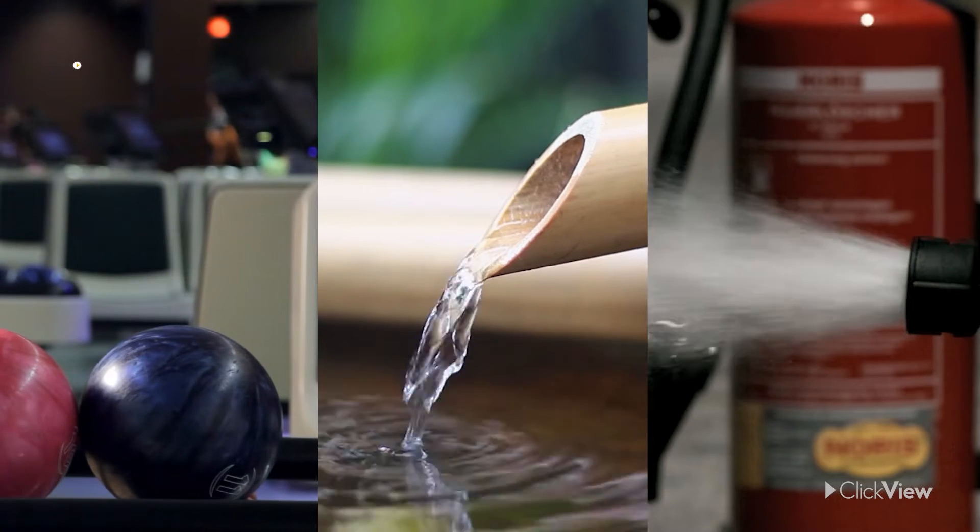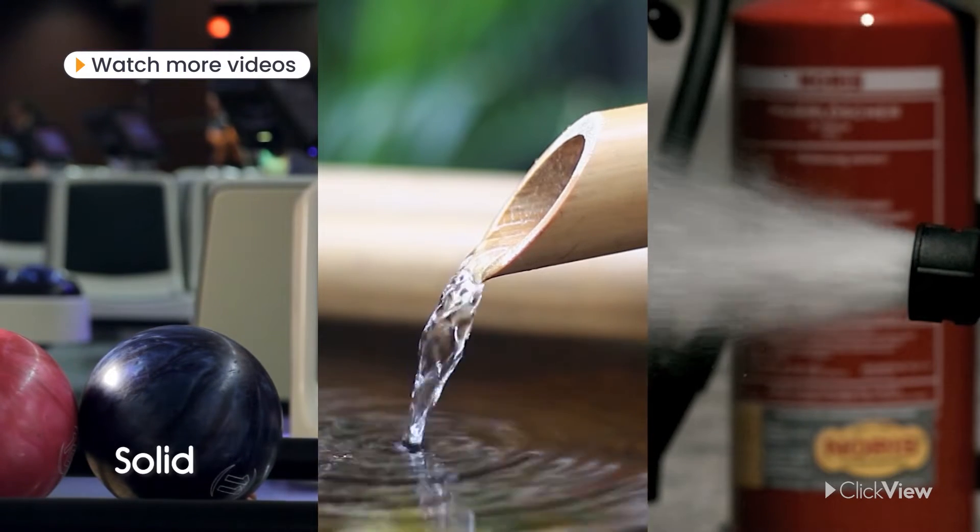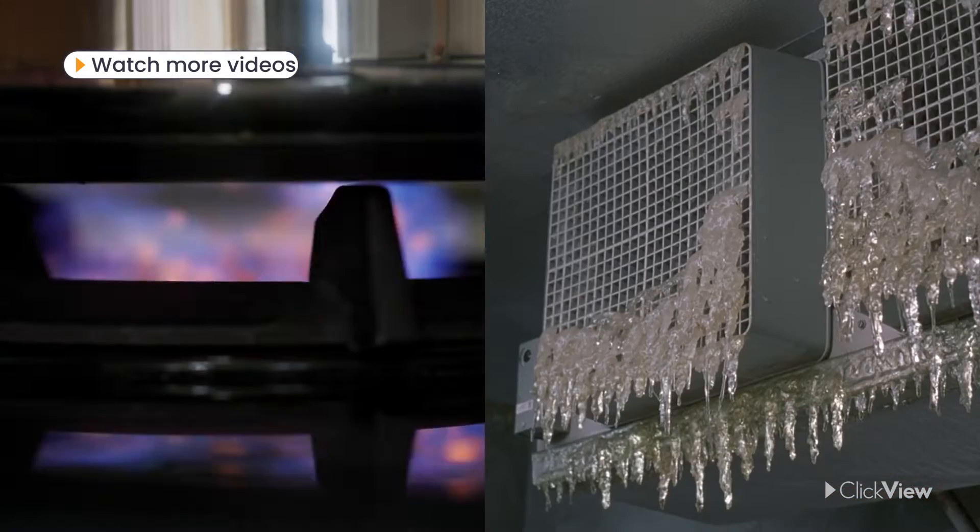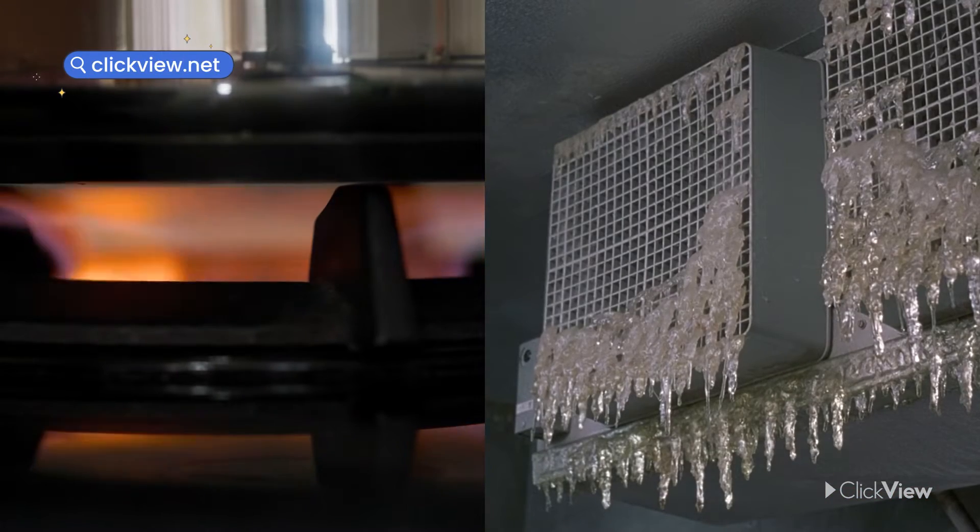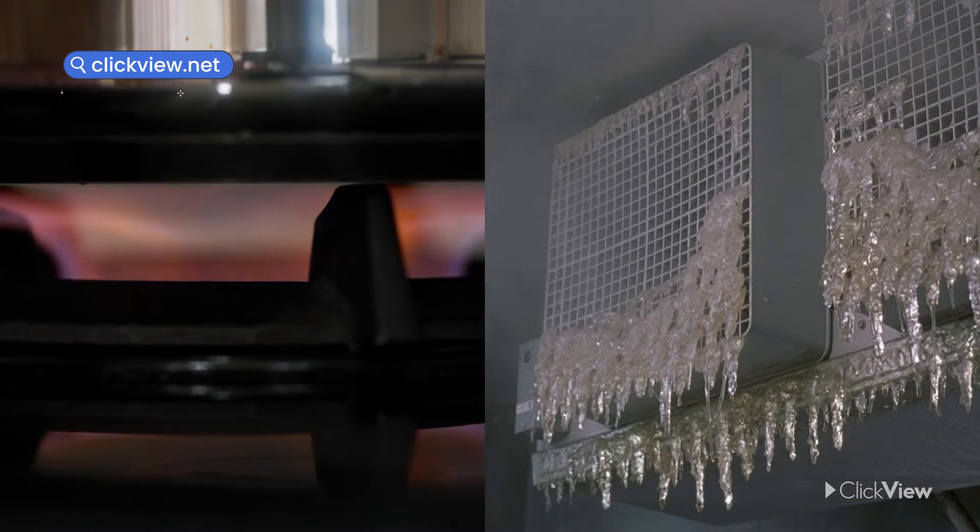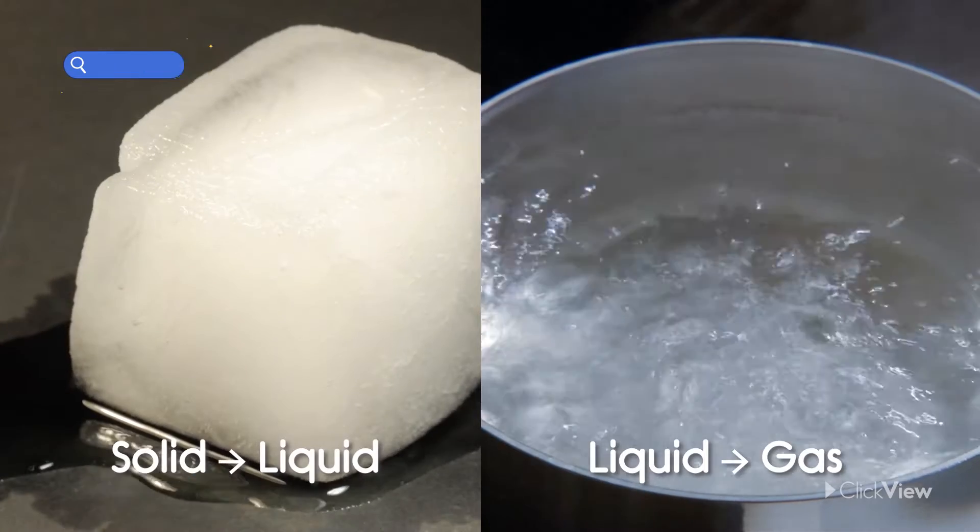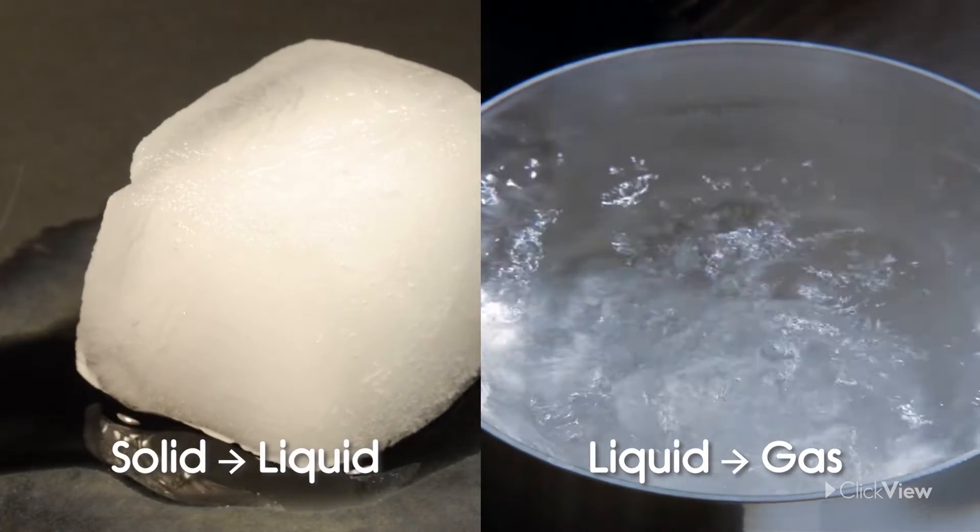Matter exists in three main states on Earth: solid, liquid, and gas. Matter can be physically changed by adding or removing heat. If enough heat is added or removed, there can be a change in state.